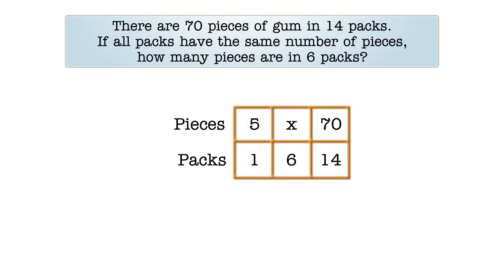Now that we know the number of pieces of gum per pack, which is the unit relationship, we can solve for X. We multiply 5 times 6 and get 30. That means there are 30 pieces of gum in 6 packs, which is the answer to the question in the problem.